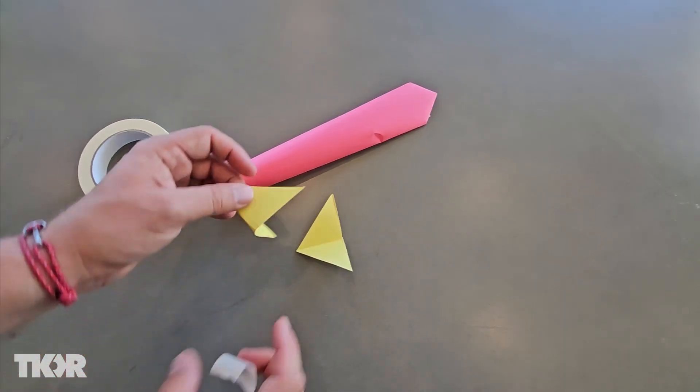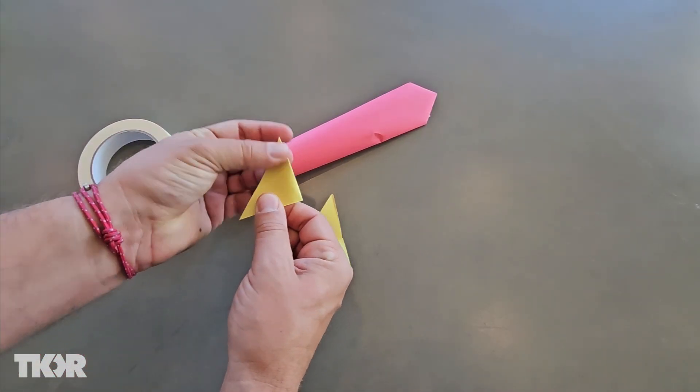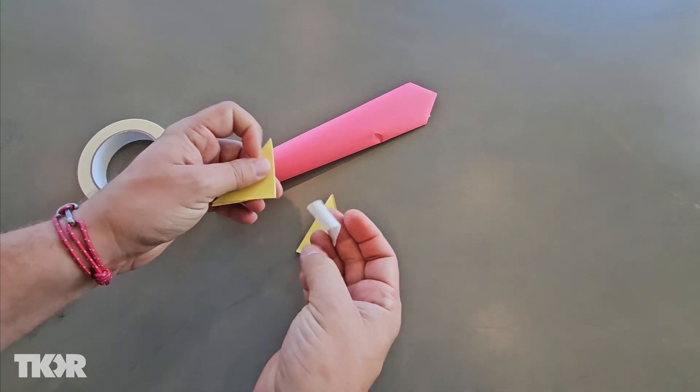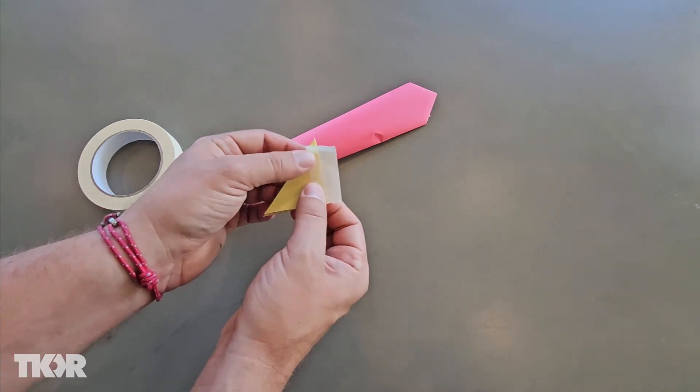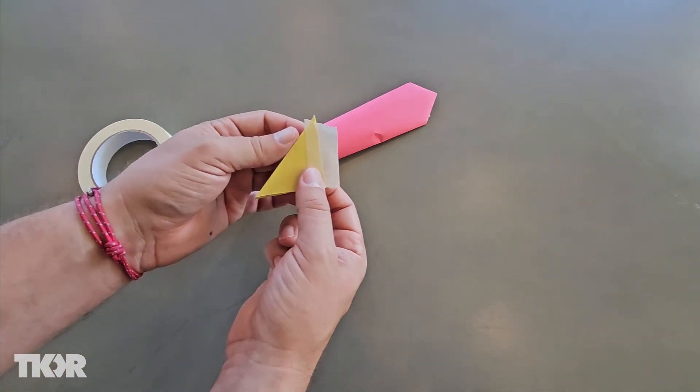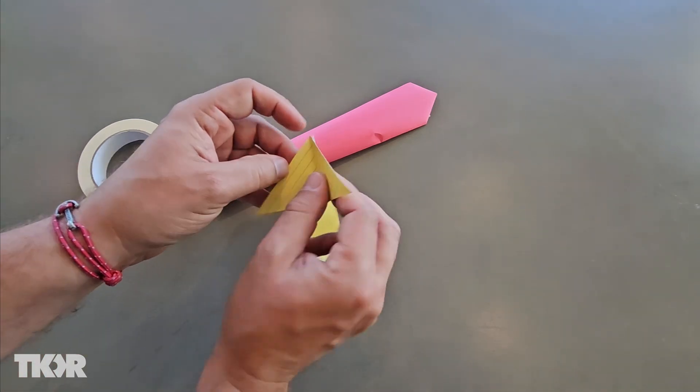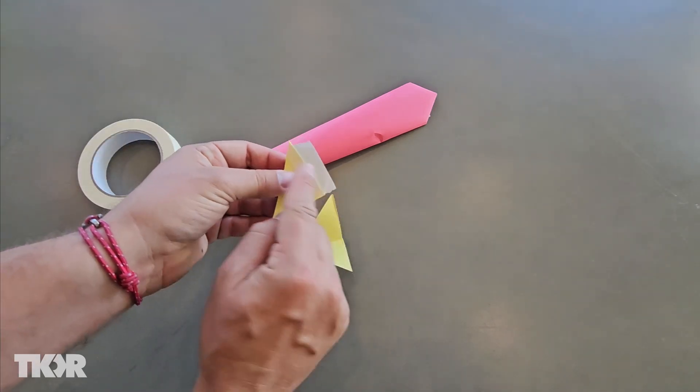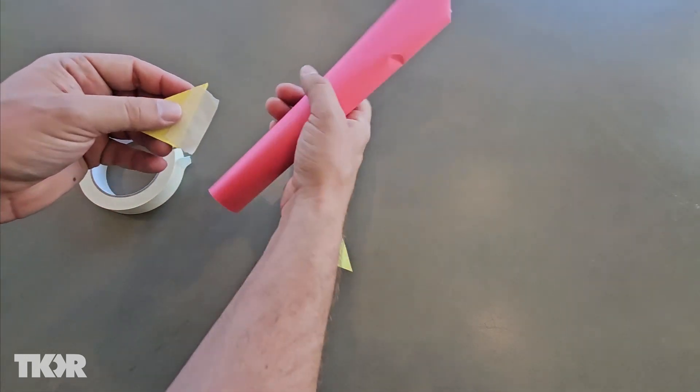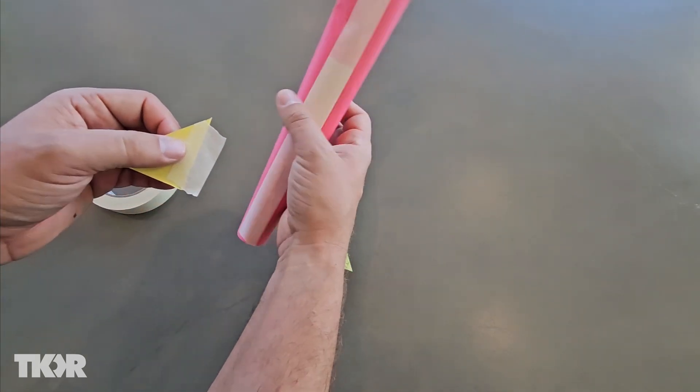To attach the fins to your rocket, fold it back into that smaller triangle shape and put a piece of masking tape on the fold. Make sure the tape doesn't hang over the top or bottom as it will make it harder to attach. Fold any excess in. Half the tape should be on the fold, half hanging off.